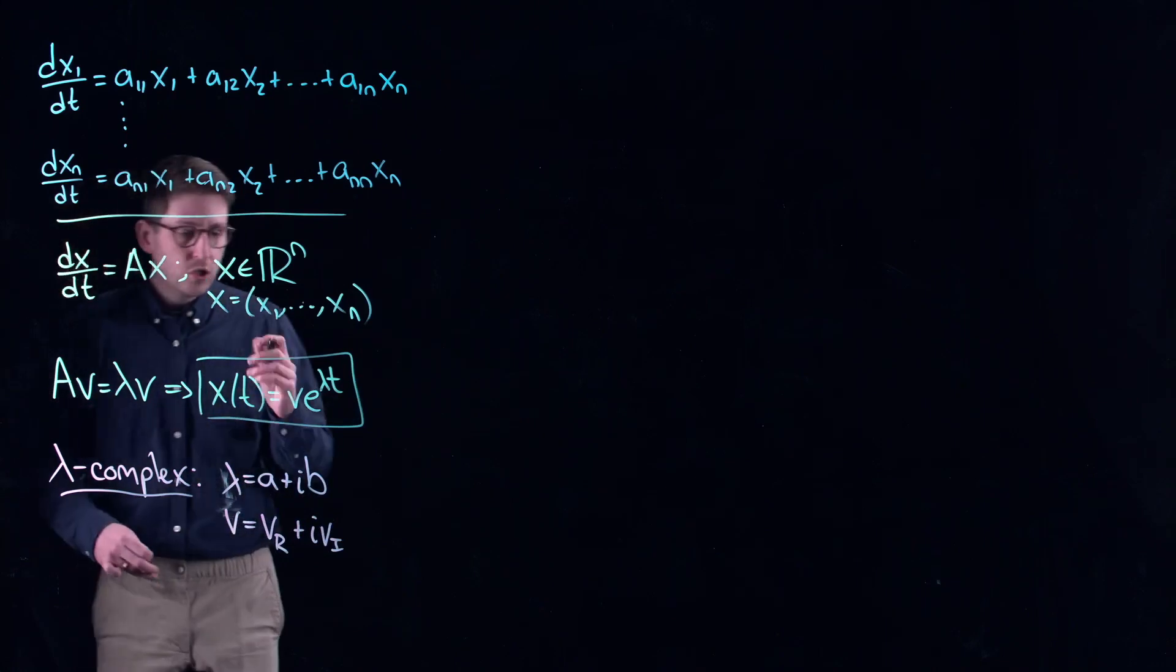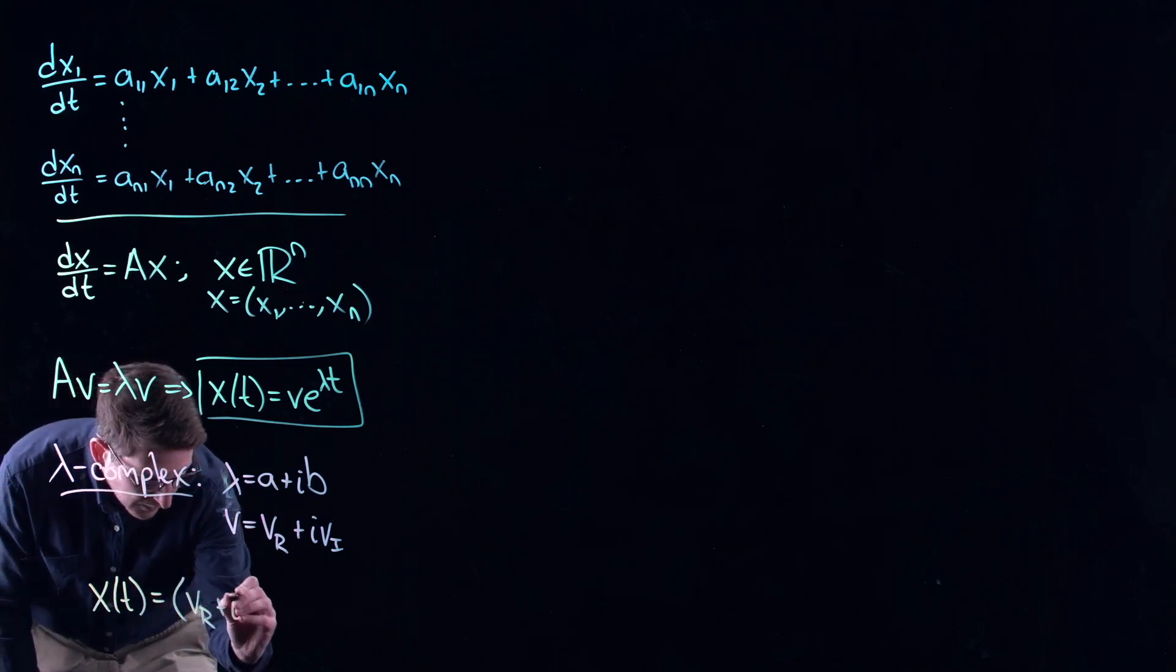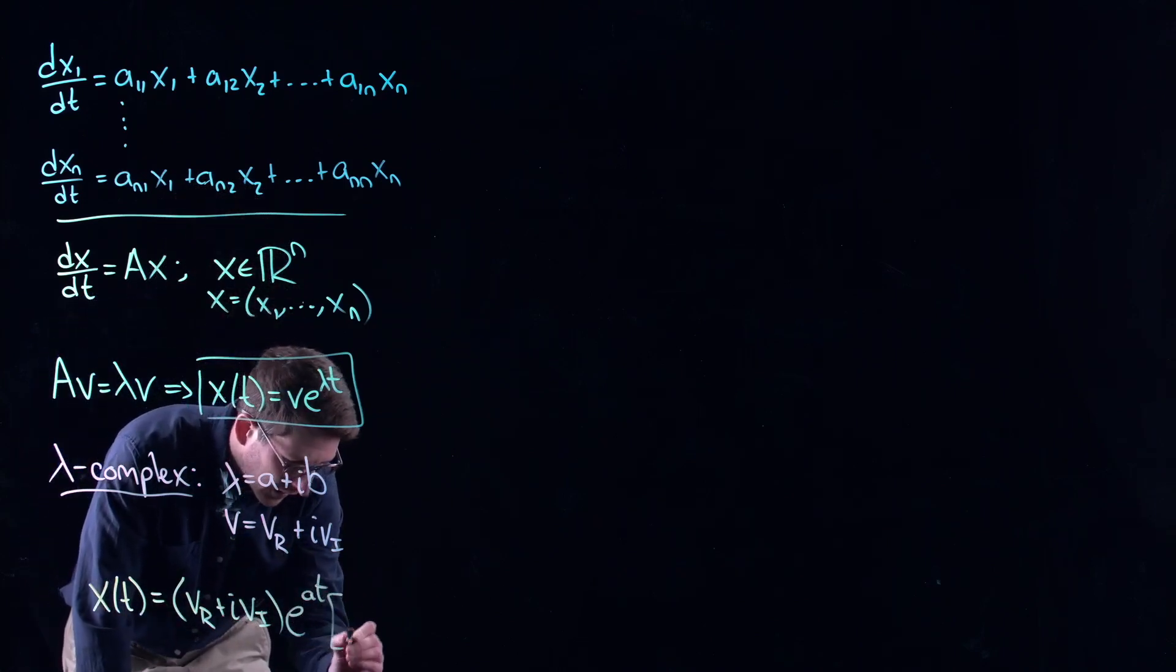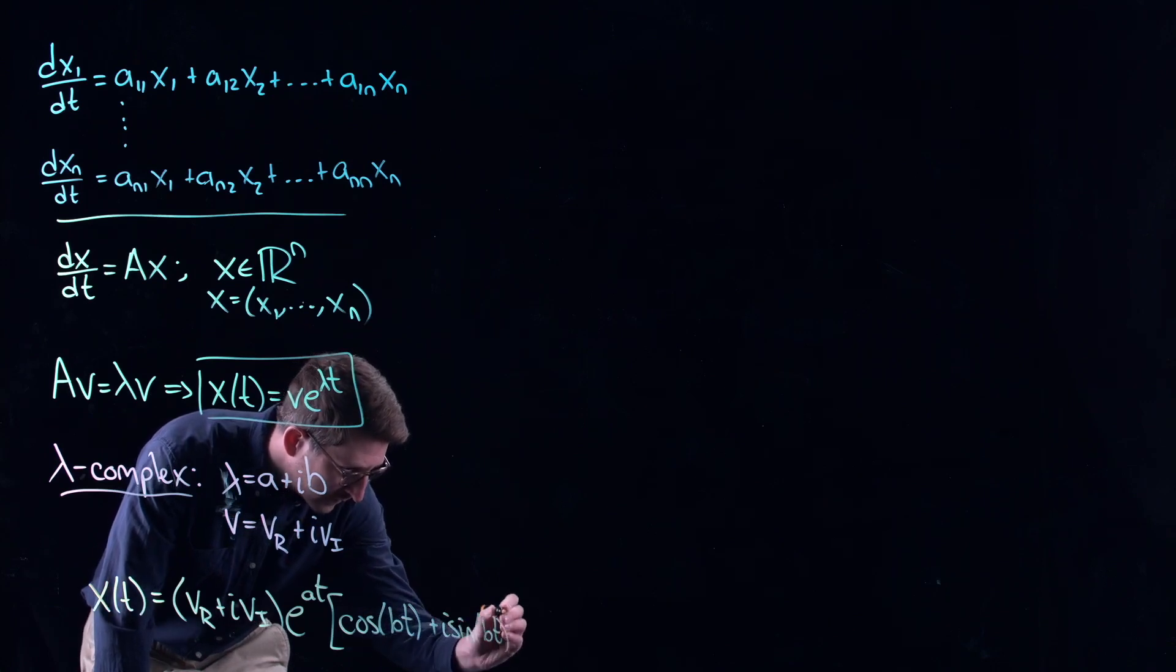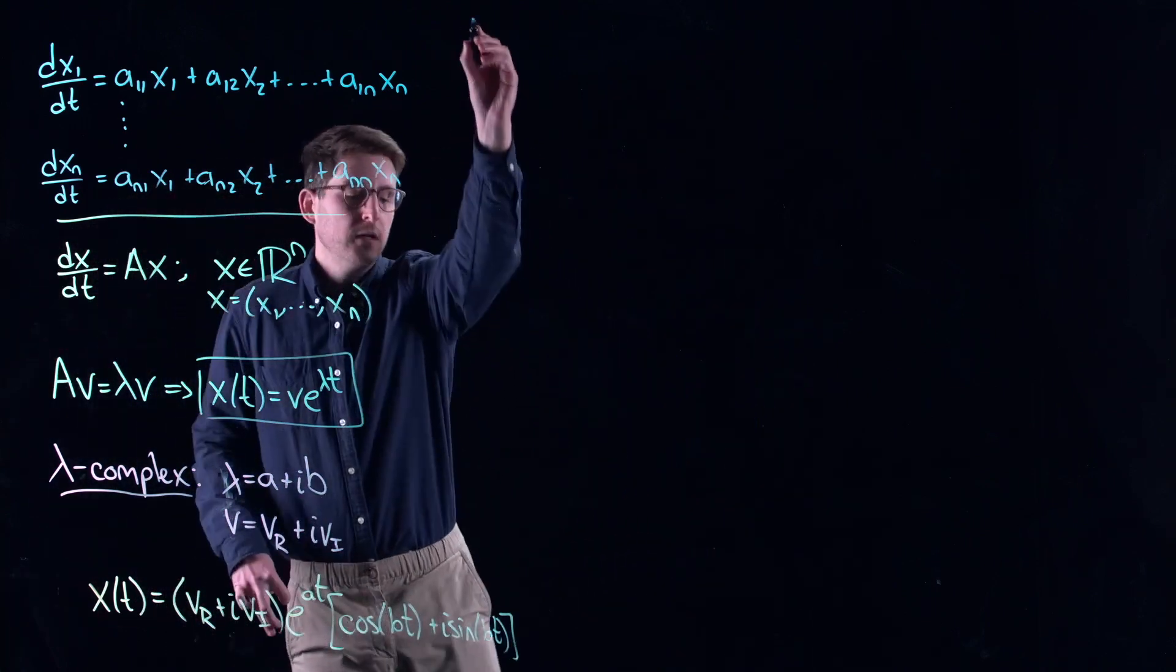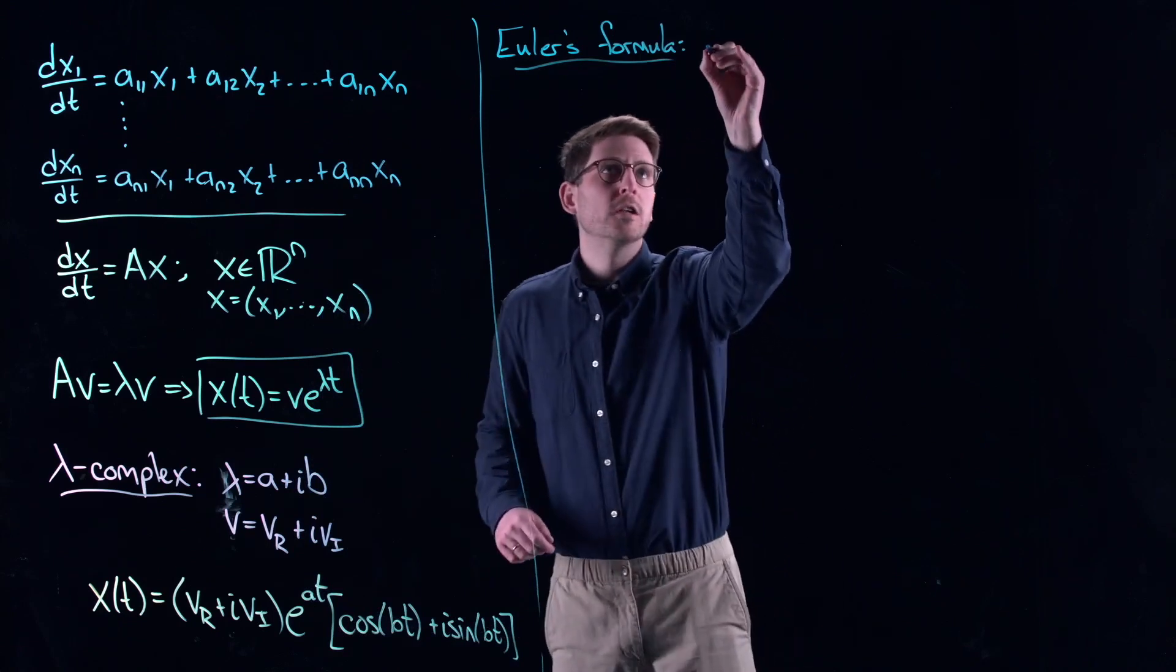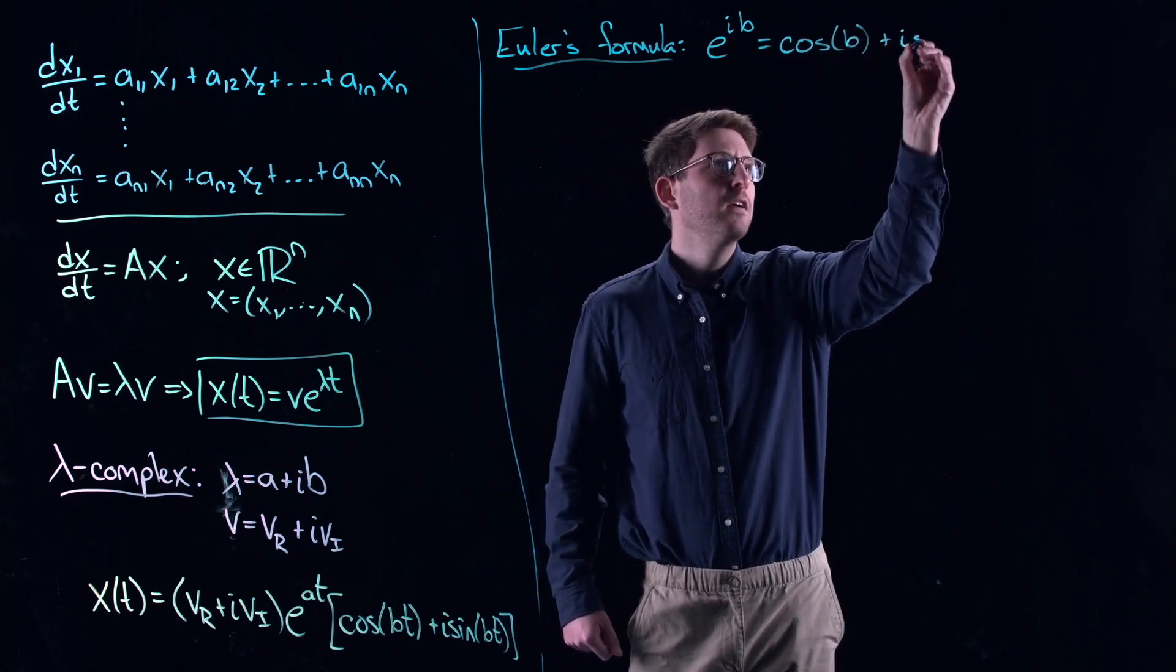Well, this actually gives you two solutions to your differential equation. Because in this case now you get x(t) = (vr + i*vi) - all I did was took the original eigenvector and wrote it as its real and imaginary parts - and then you get e^(at) times (cos(bt) + i*sin(bt)). Where does the cos and the sine come from? They come from Euler's formula. Euler's formula is how we deal with complex exponents in the exponential function. So you say e^(i*bt) = cos(bt) + i*sin(bt).